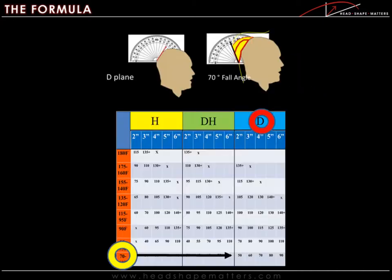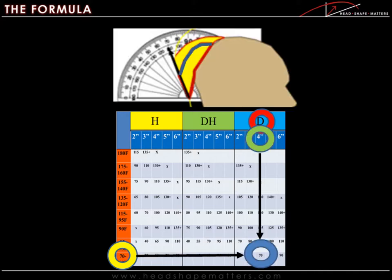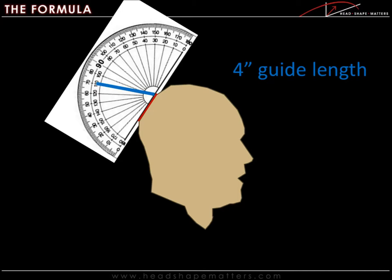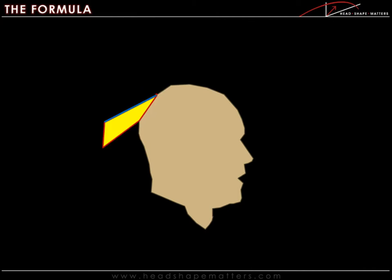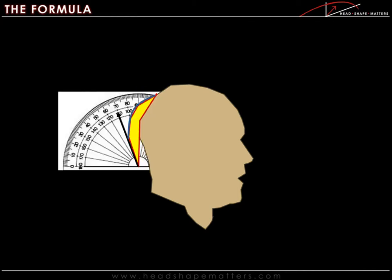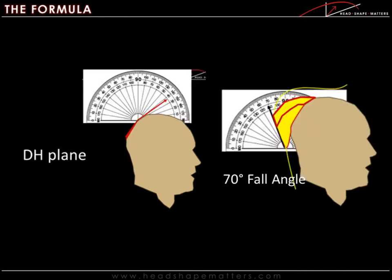Using the head shape matters projection chart, you can find the diagonal's 70 degree fall angle that you want. Find the top length of hair within that plane. In this case it'll be 4 inches. That will become our guide length. Our projection chart tells us to cut this at 70 degrees in order for it to fall into 70 degrees.